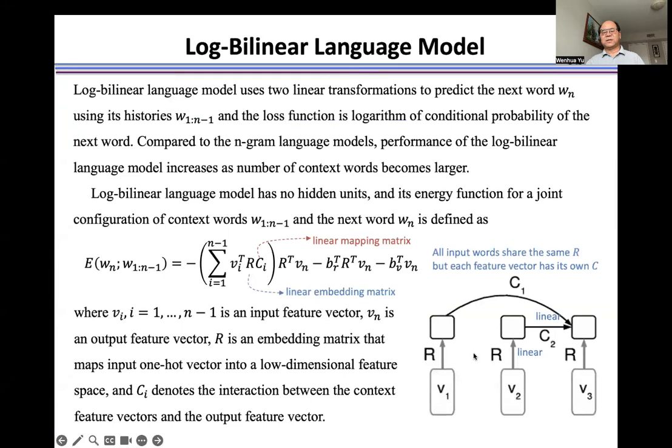The first one uses embedding matrix R to encode the input words to the feature vector in the feature space. And the second one uses matrix C to map the feature vector to the feature vector of the next word.